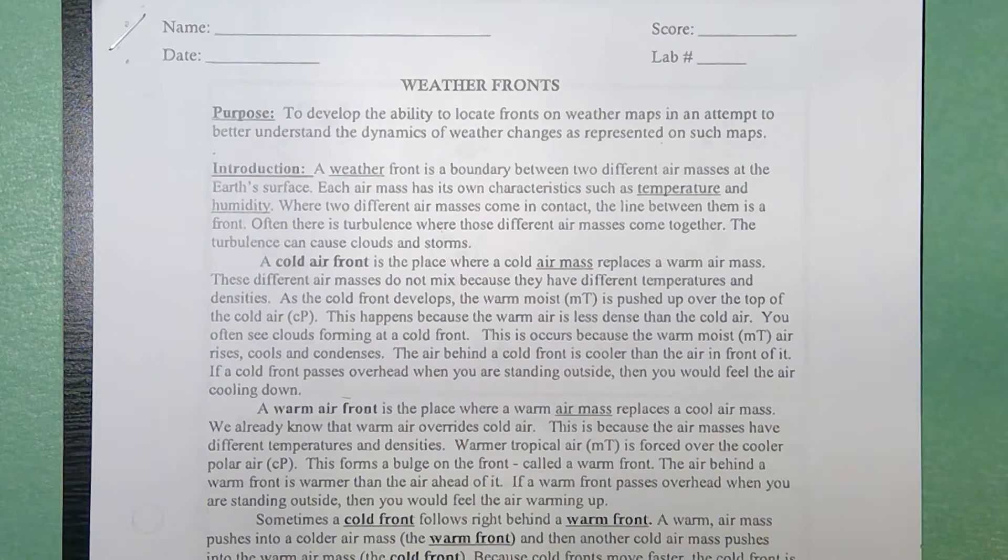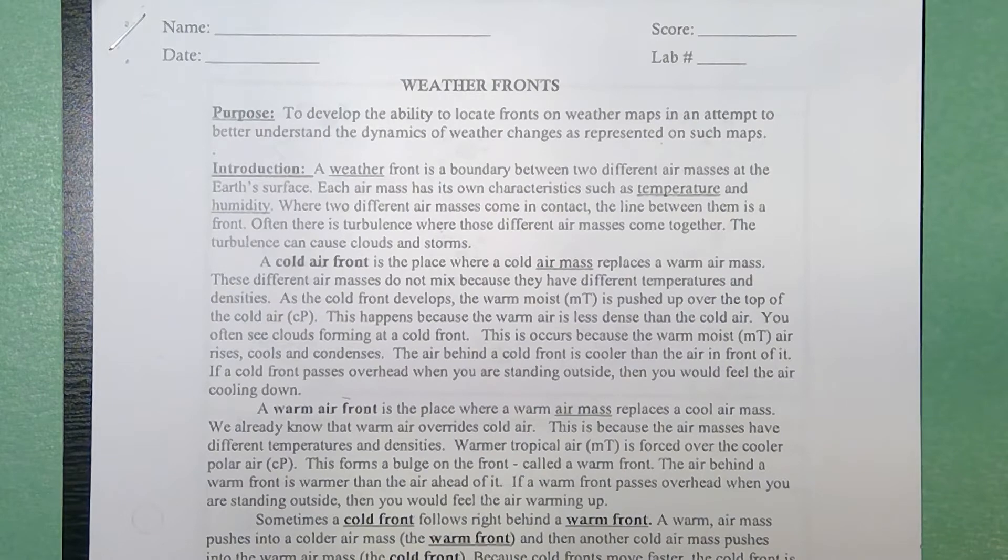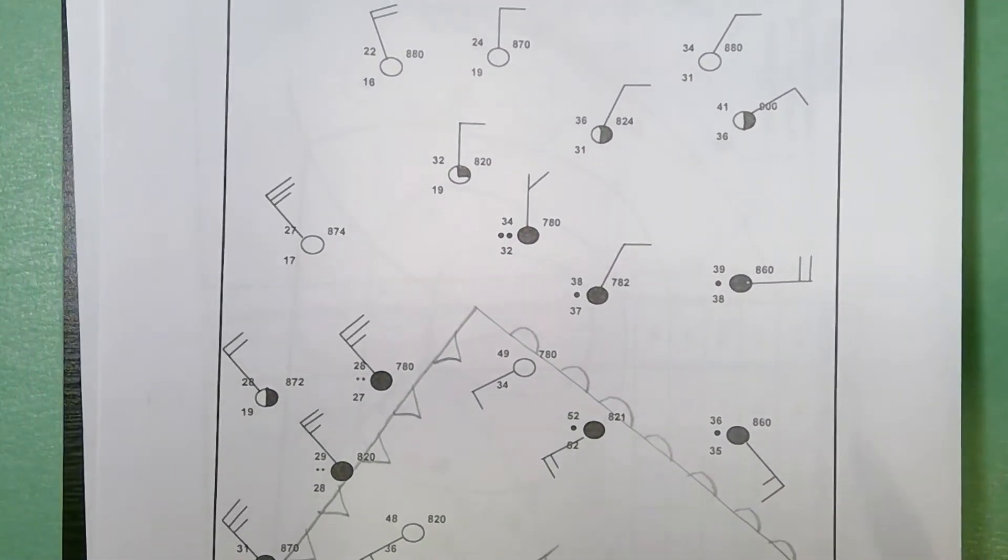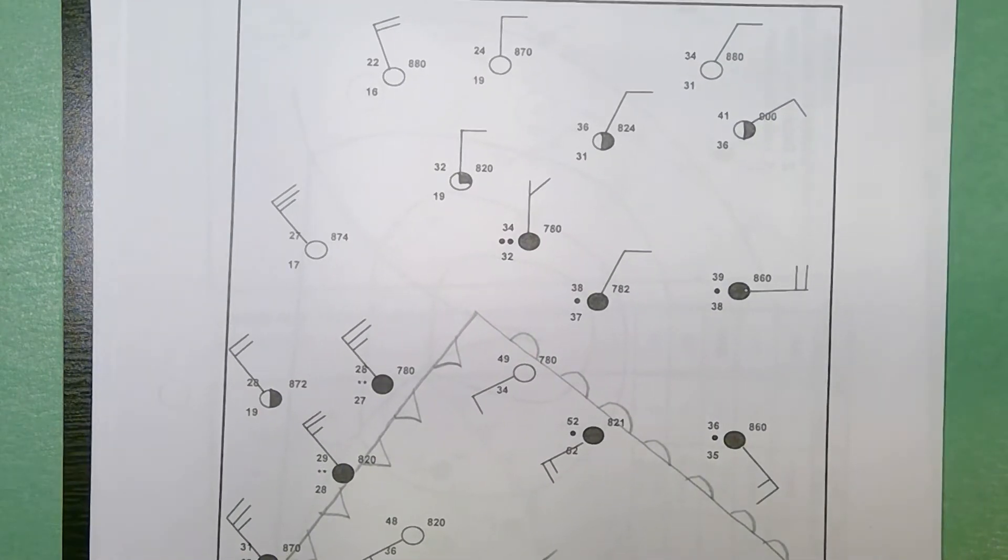Mr. Abbott again, and we're here for the conclusion of the weather fronts activity. I hope you drew your isobars properly, so let's take a look at this and finish up the shading of that low-pressure cyclonic storm system. I'm looking at the two fronts that we found: a warm front and a cold front.